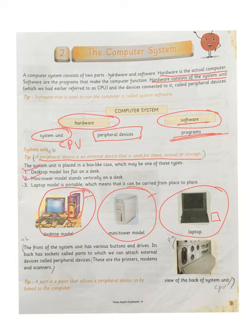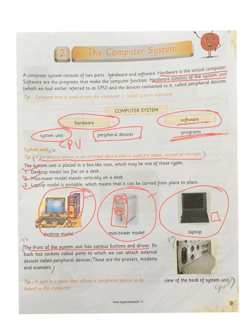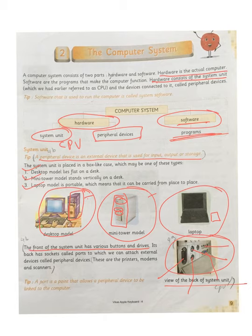The front of the system unit has various buttons and drives. Its back has sockets called ports, to which we can attach external peripheral devices such as printers, modems, and scanners. The front side has a power button, floppy drive, and CD drive. The back side is where you connect your speaker, monitor, printer, pen drive, and modem.